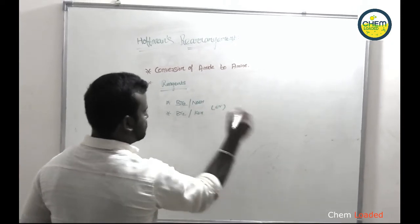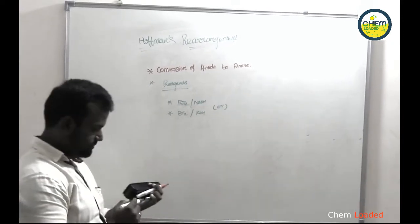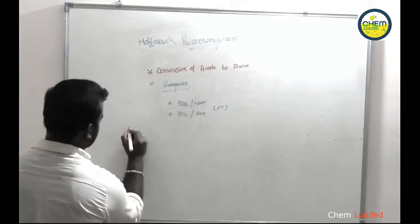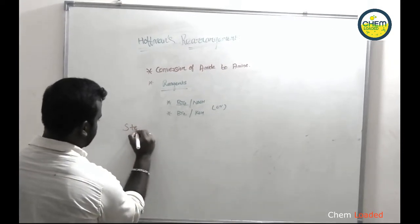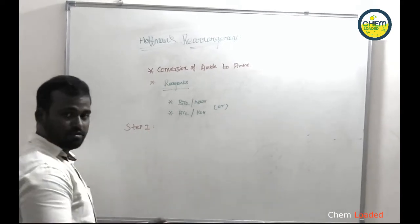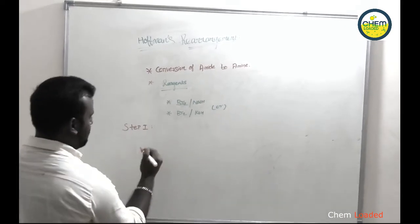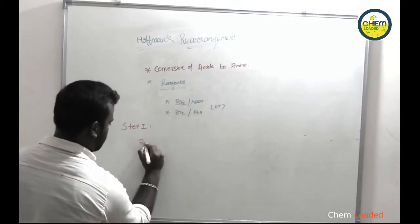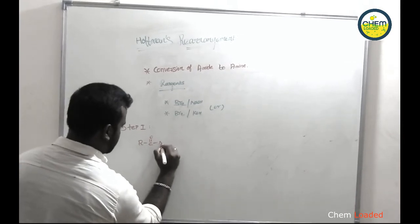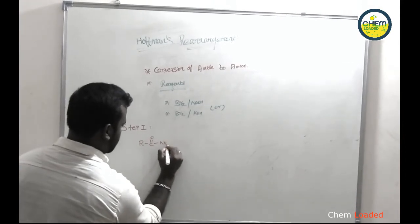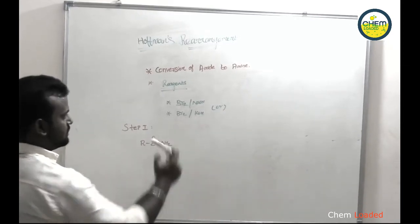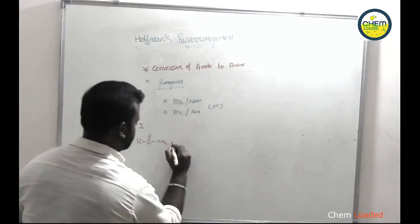Step 1: one primary amide reacts with bromine and a strong base.